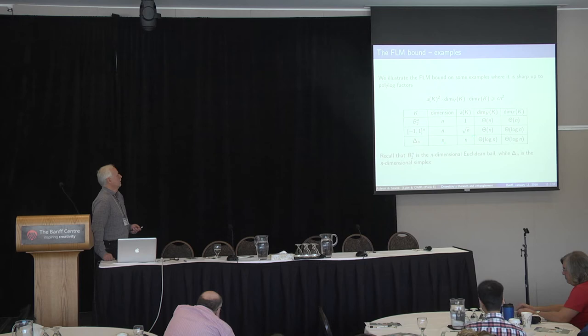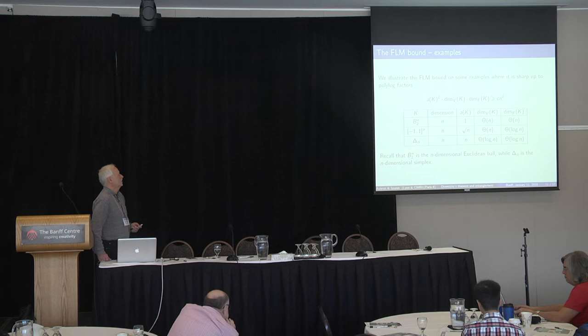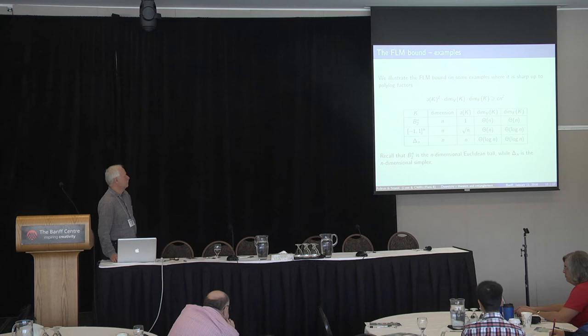For the simplex, the situation is somewhat interesting because asphericity is as large as it can be for general bodies, and both facial and vertical dimension are log N. So what we get here is that up to a log-squared factor, we get N² from each of those, and this is precise up to log² N.